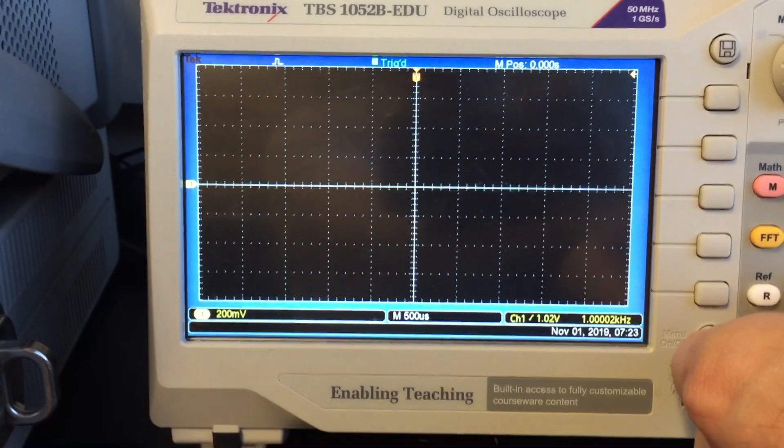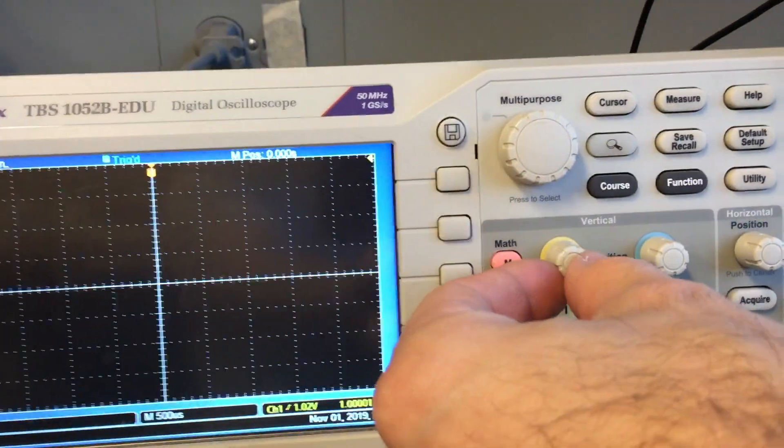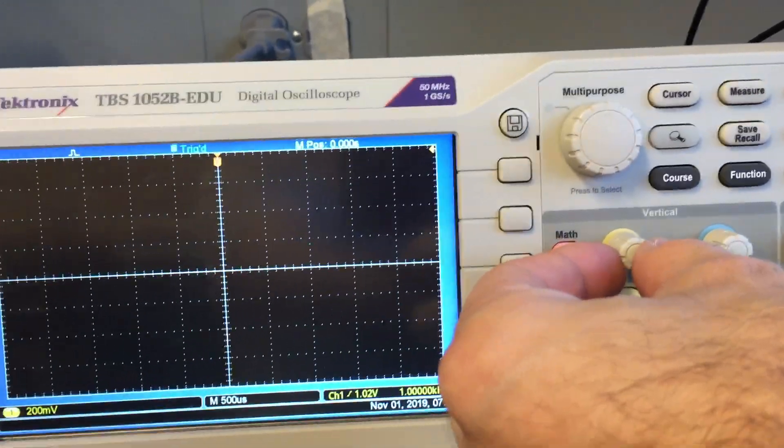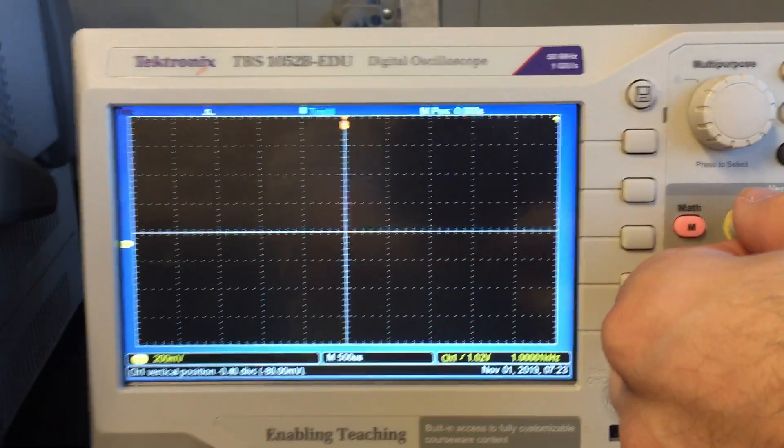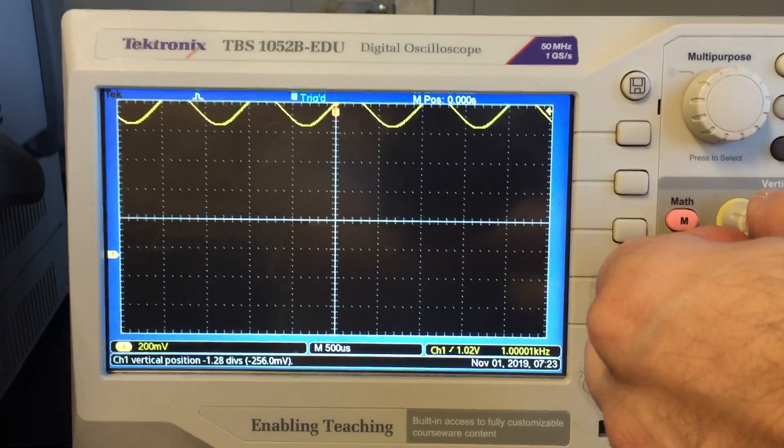Now I'm off the screen. So I could use the vertical position knob, that's the little vertical knob up here, to bring the baseline indicator down. You can see the yellow number 1 on the left-hand screen moving down, and now I'm starting to see my sine wave.